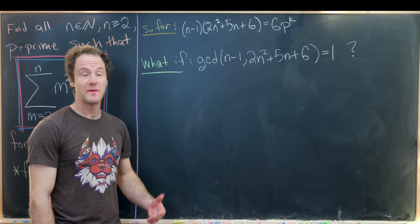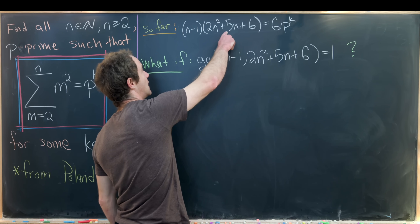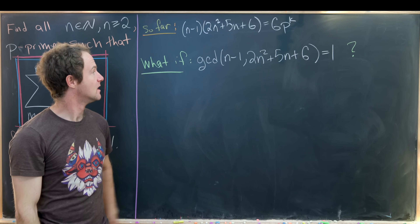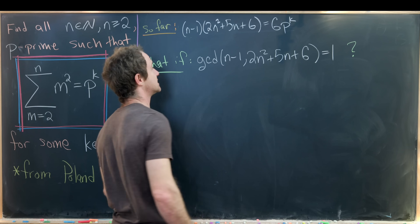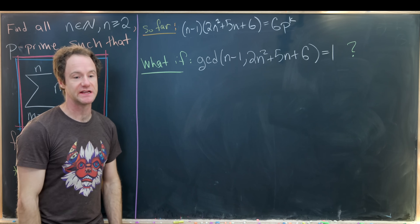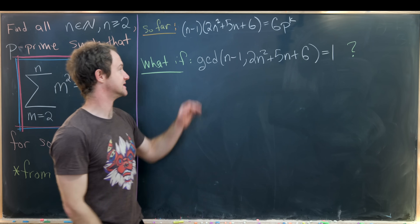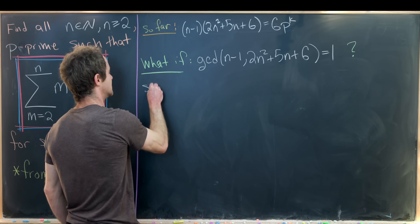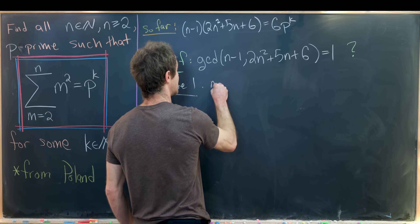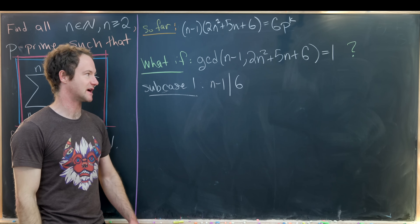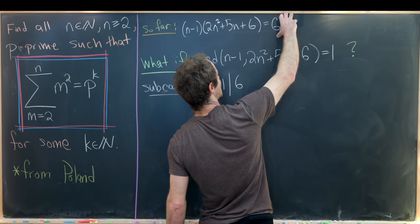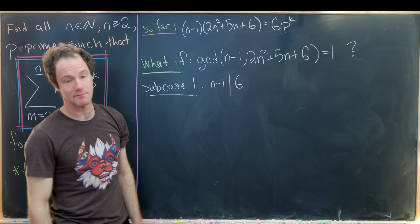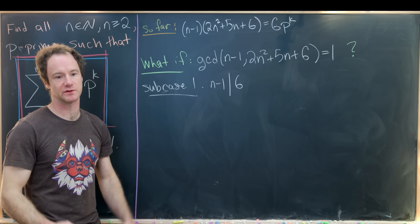We now work through both cases. Our problem is: find when (n − 1)(2n² + 5n + 6) = 6·p^k, knowing the GCD of (n − 1) and the quadratic is either 1 or 13. Case 1 is when the GCD equals 1. This breaks into two subcases: subcase 1 is if (n − 1) divides 6, and subcase 2 is if (n − 1) does not divide 6. The right-hand side is a multiple of 6, so the left-hand side must be too.